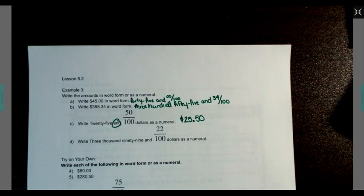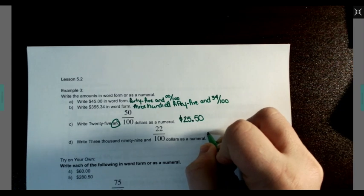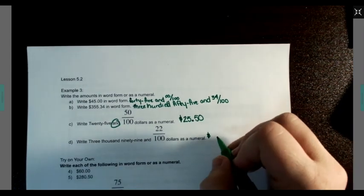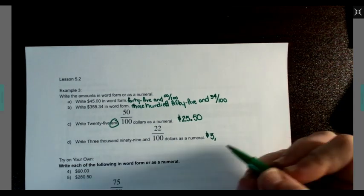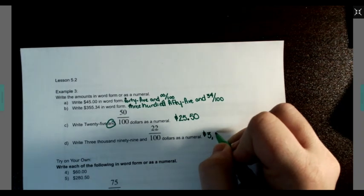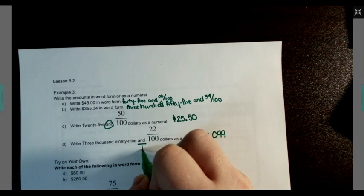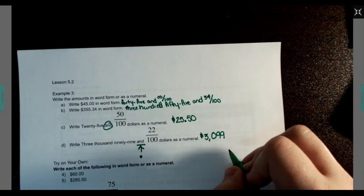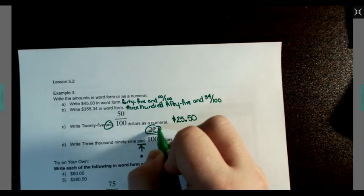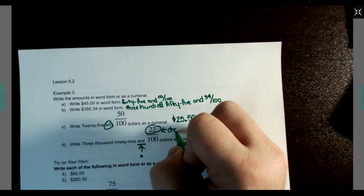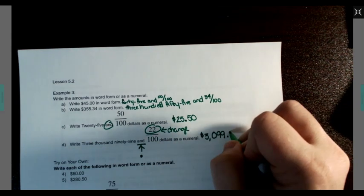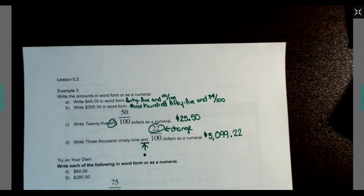Write 3,099 and 22 over $100 as a numeral. So we've got 3 comma, it says 99. There's no 100, so that would be 0, 9, 9. And represents my decimal. And my numerator is my change. So 22 is my cents here.